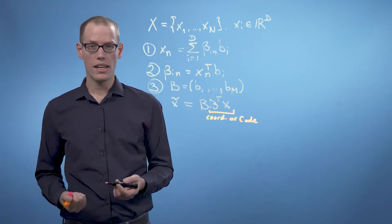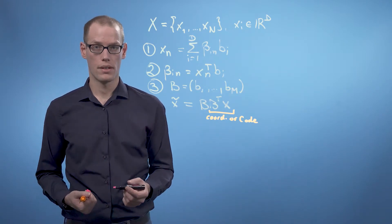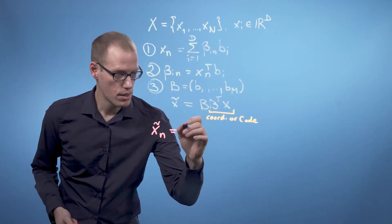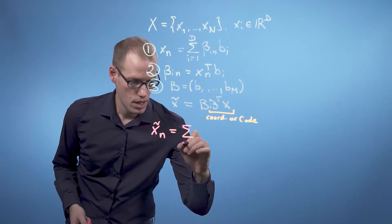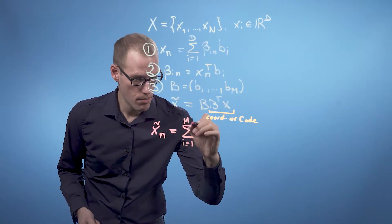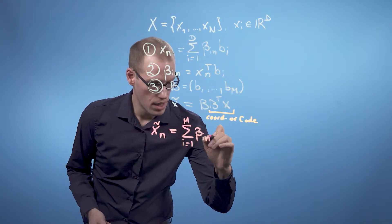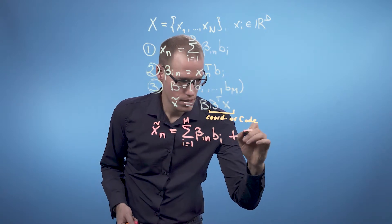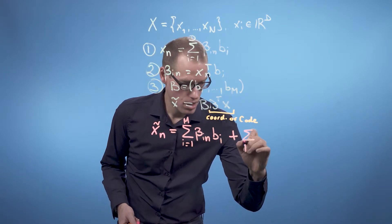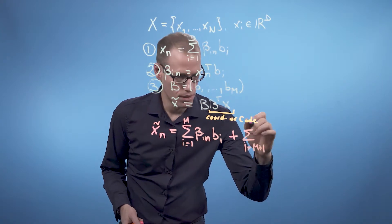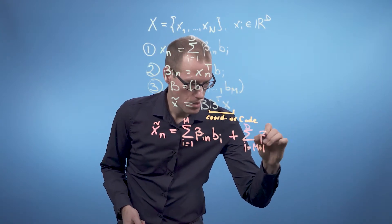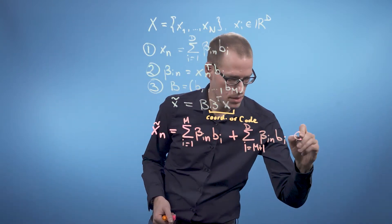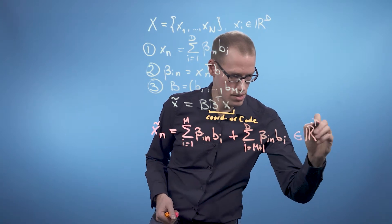Generally, we can write any X_n tilde in the following way. X_n tilde can be written as sum from i equals 1 to m of beta_in times b_i plus the sum from i equals m plus 1 to d of beta_in times b_i. So this entire thing is still living in R^d.